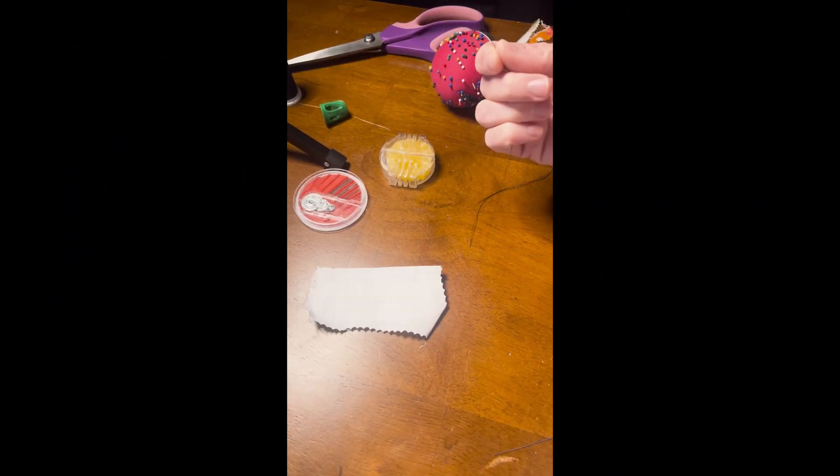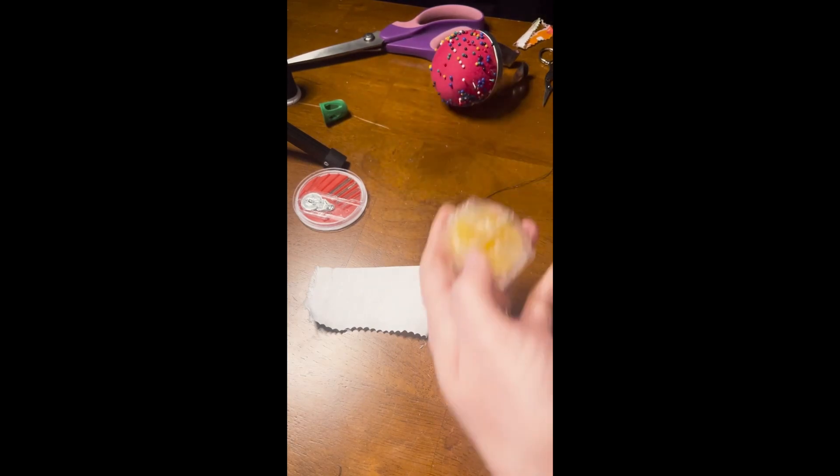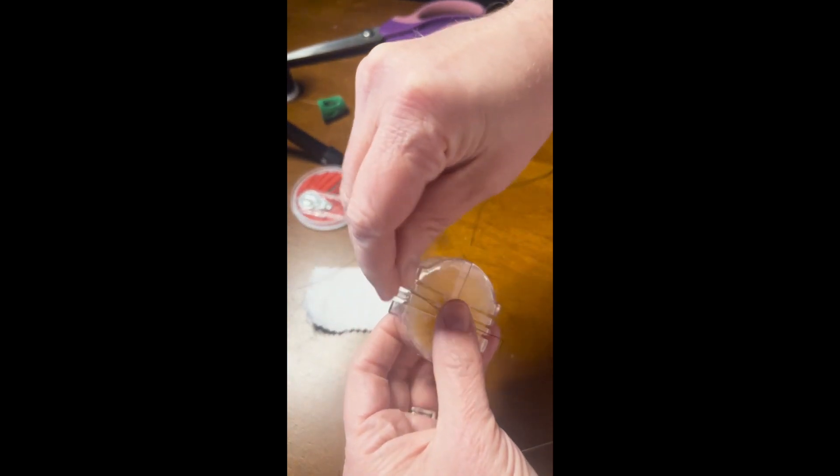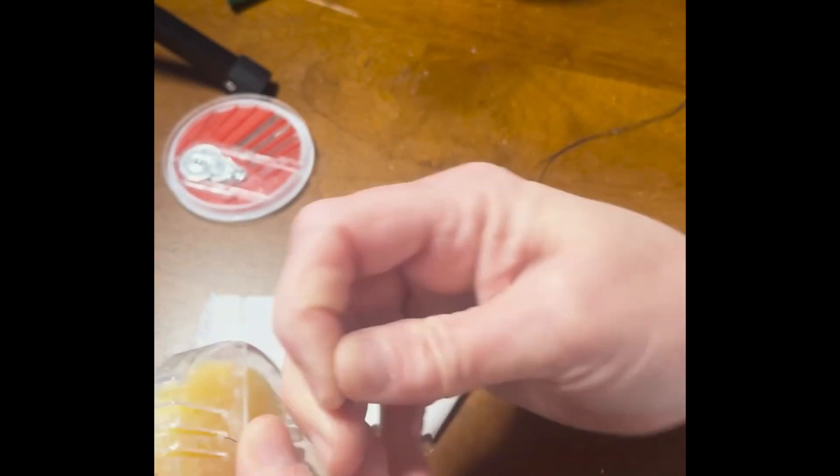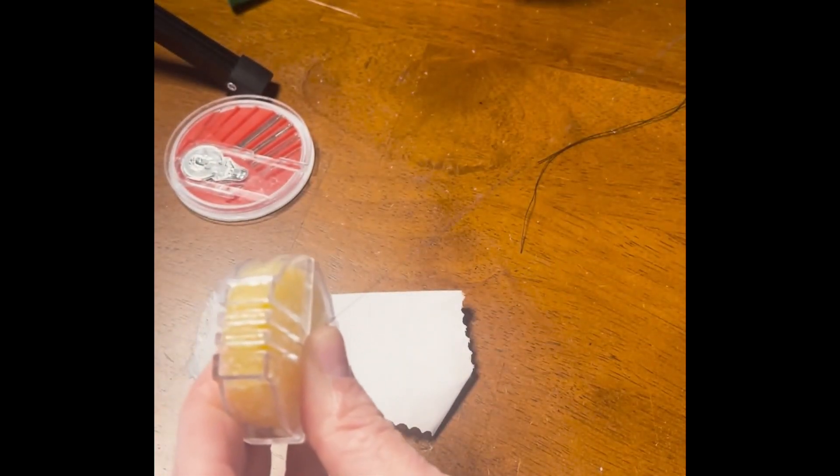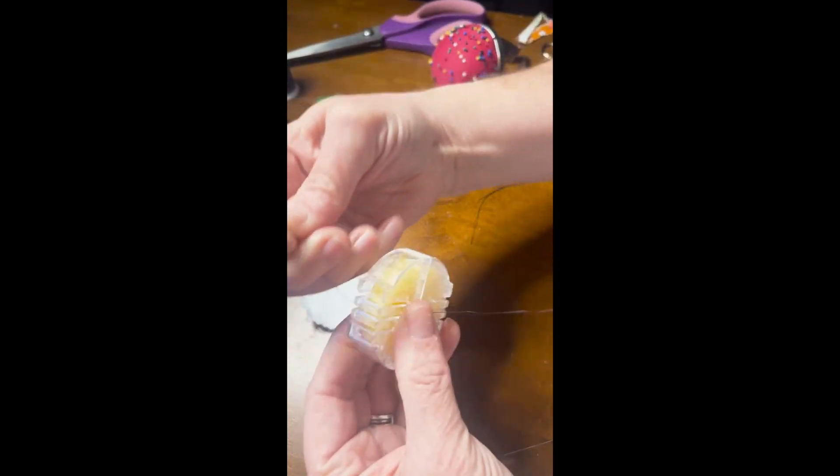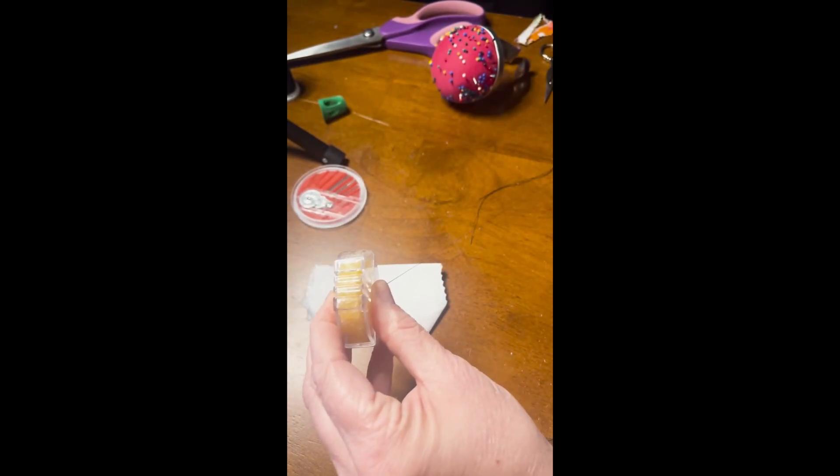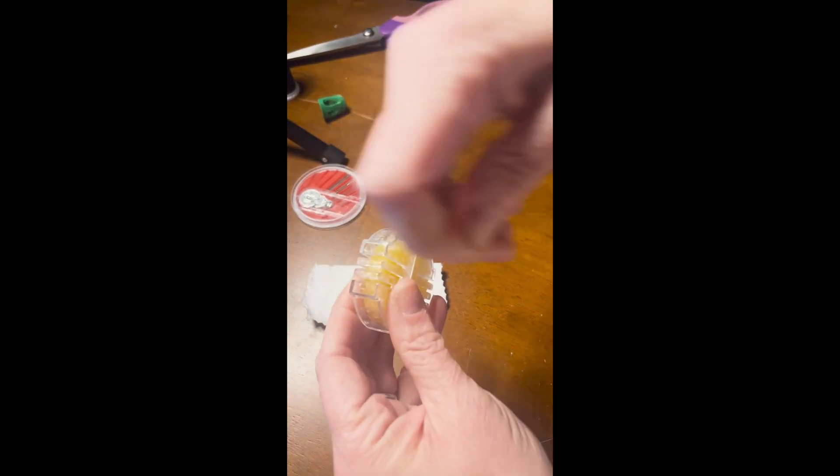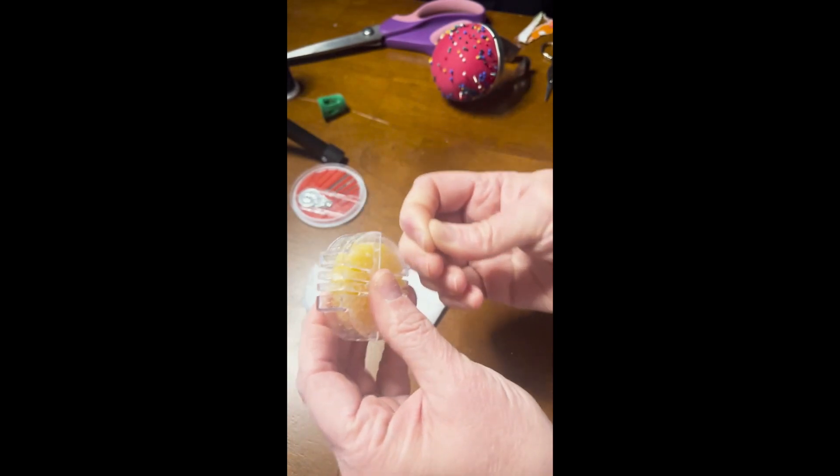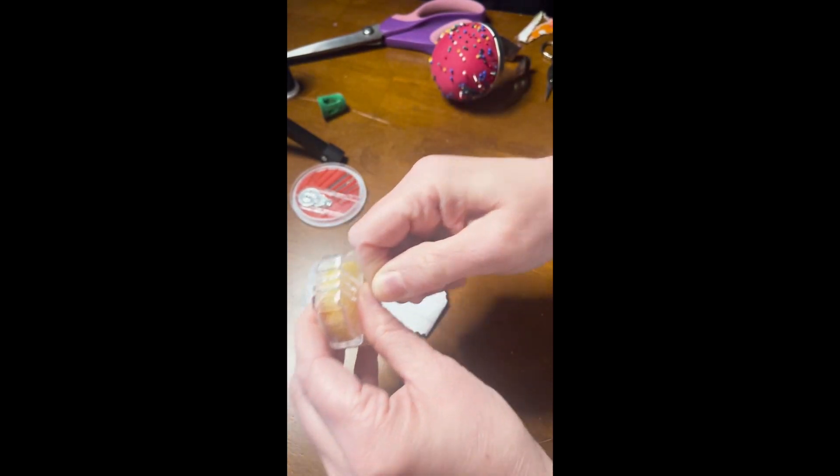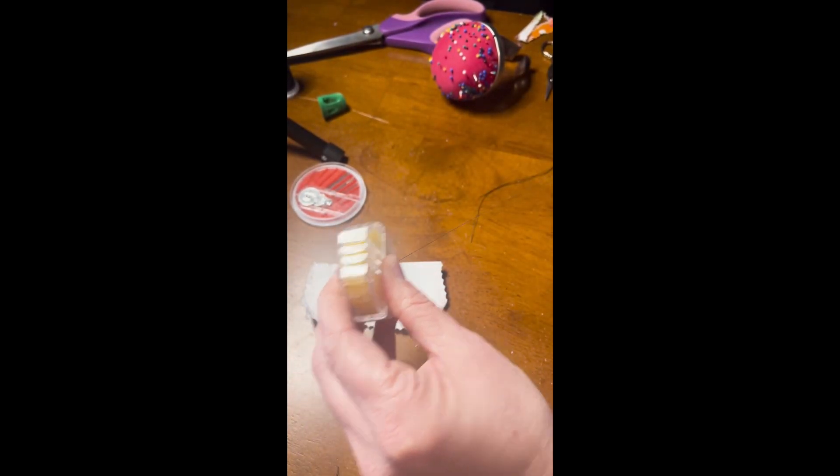Alrighty, we are about ready to get stitching. We're going to wax our thread first. No matter what thread you use, make sure you use a wax because it will help strengthen your thread. It will help prevent some of your knots. It will help those fibers to lay down properly on your thread as it goes through the fabric.